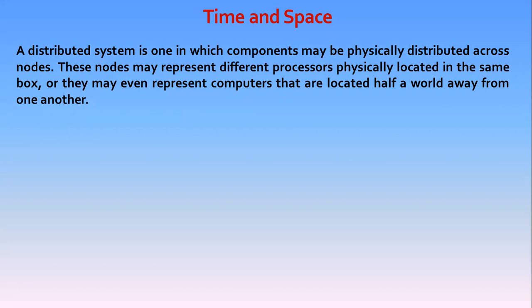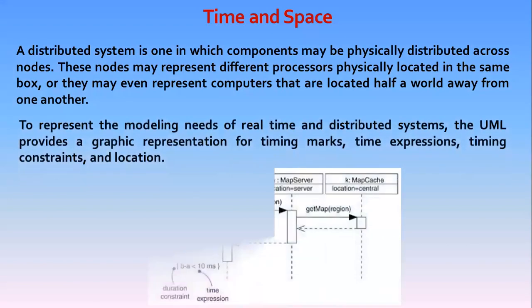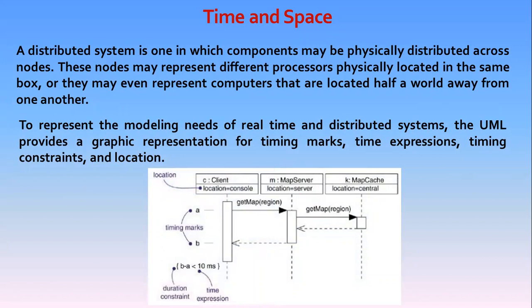Modeling time and space is an essential element of any real-time and distributed systems. We use a number of UML features including timing marks, time expressions, constraints, and tagged values to visualize, specify, construct, and document these systems. Dealing with real-time and distributed systems is very hard. Good models reveal the properties of the system's time, space, and characteristics.